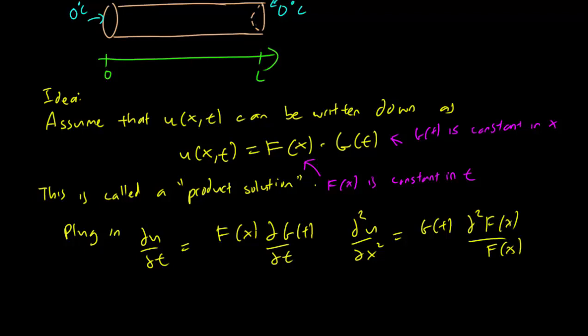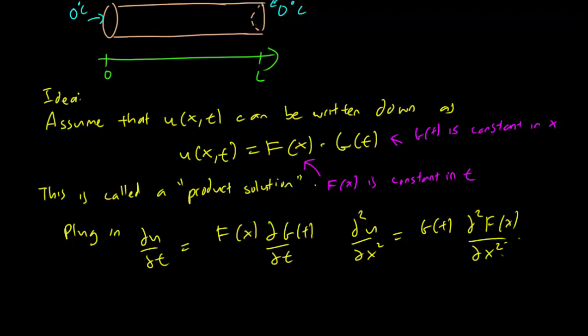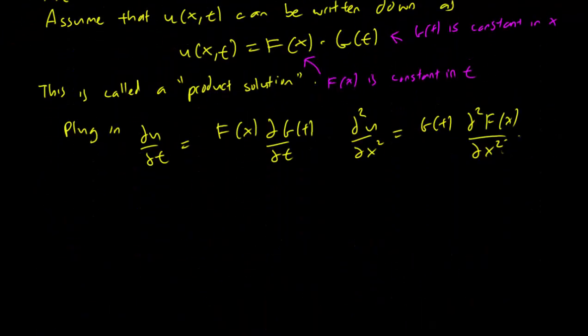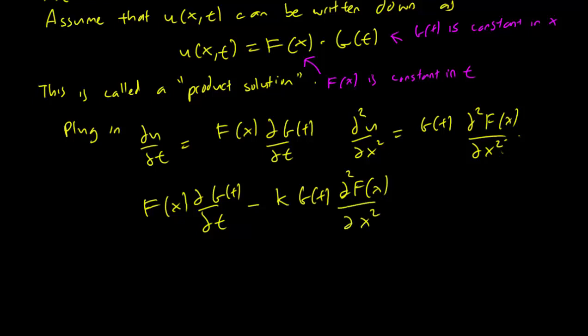So please note that because F(x) is a constant in t, we can just pull it out of the derivative. And because G(t) is constant in x, we can just pull it out of the second derivative. Sorry, this should be ∂²F/∂x². Alright, so now plugging in our heat equation, we get F(x) ∂G/∂t minus k times G(t) ∂²F/∂x² equals 0.